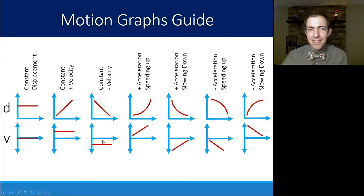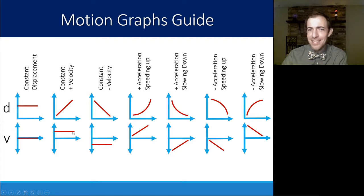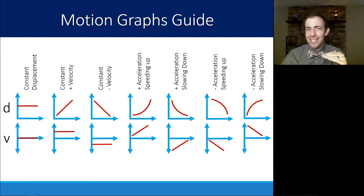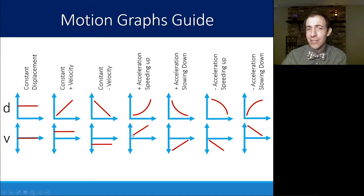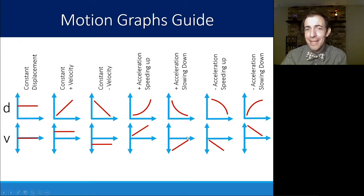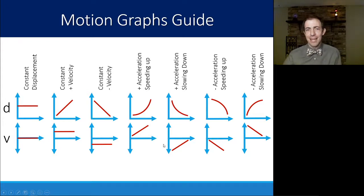If we're looking at a constant velocity on a velocity graph, it just shows that the velocity itself isn't changing — it's a flat line. If acceleration is happening, it means our velocity is changing: it's either getting farther away from or closer to zero, either in the positive or the negative direction.